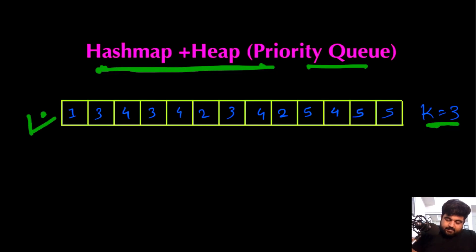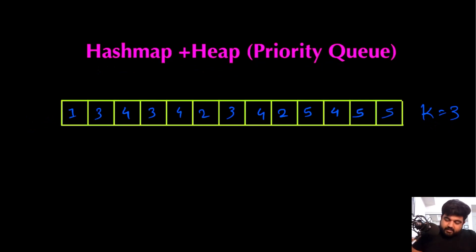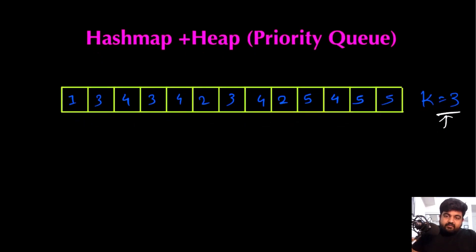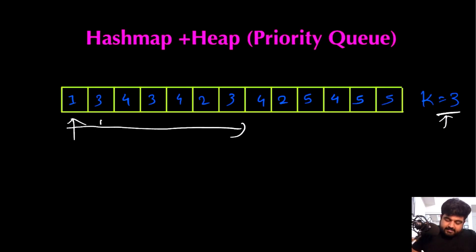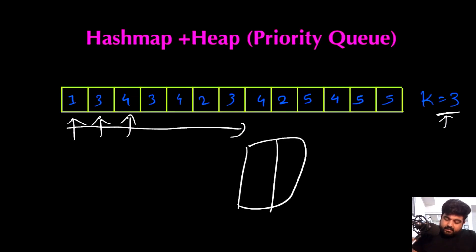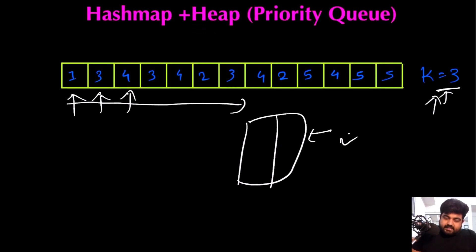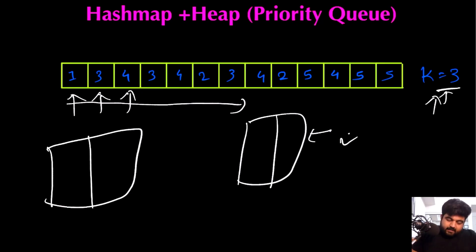I have created a custom example with k equal to 3. Whenever we need to return the top k elements, we first need to iterate over the entire array to find how many times any single element is occurring. We need some way to store how many times any particular individual element occurs — for that, we are going to use a hash map. The key will be the distinct value of the array and the value will be the occurrence count of that element.